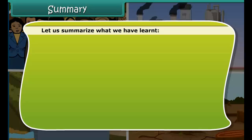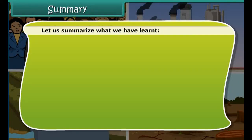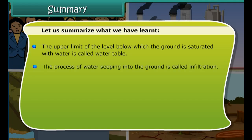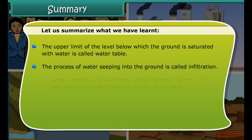Groundwater is an important source of fresh water on earth. The upper limit of the level below which the ground is saturated with water is called the water table. The process of water seeping into the ground is called infiltration. Large deposits of groundwater stored between layers of hard rock below the water table are known as aquifers.